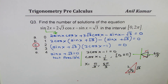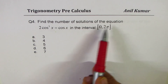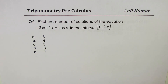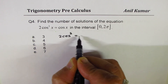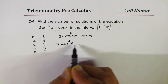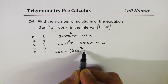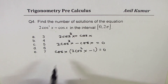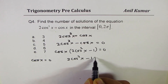We'll take up more examples on solving trigonometric equations later, but here is the last question in this video. Question number 4: find the number of solutions of 2 cos³x = cos x in the interval 0 to 2π. Bringing everything together: 2 cos³x − cos x = 0. Cos x is a common factor, giving cos x(2 cos²x − 1) = 0.